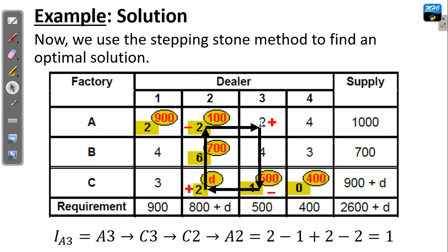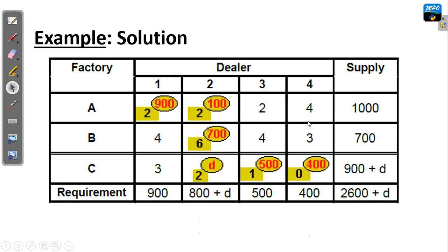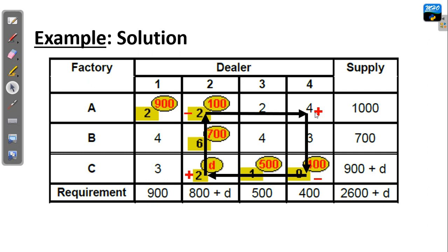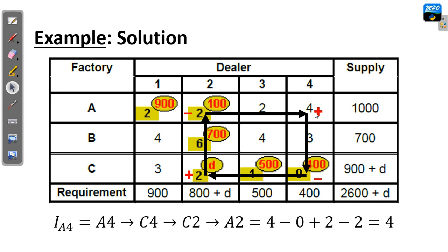After cell A3, we go to the next cell A4. From A4, we develop a loop going downward to C4, to the left, upward, and then to the right back to where we started. We assign the signs plus, minus, plus, and add all the costs at those corners with their respective signs, ending up with a net cost change coefficient of 4.